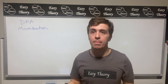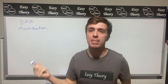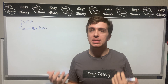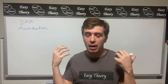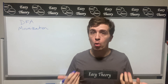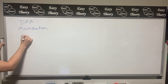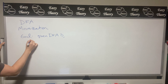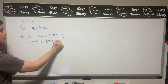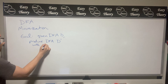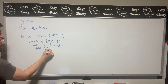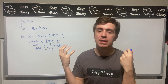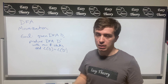We're going to be talking about deterministic finite automaton minimization. What does it mean for a DFA to be minimal? It means to find the minimum size possible DFA for a particular language. So we're given some DFA D, and we want to produce a different DFA D-prime with the minimum number of states, where the language of D equals the language of D-prime.